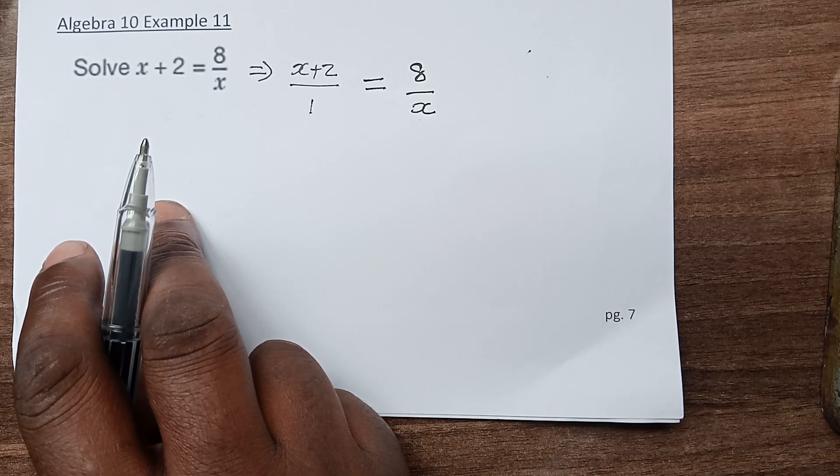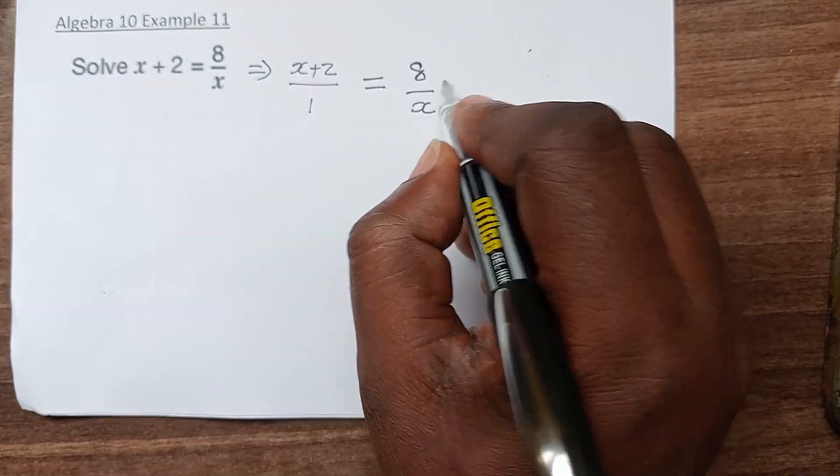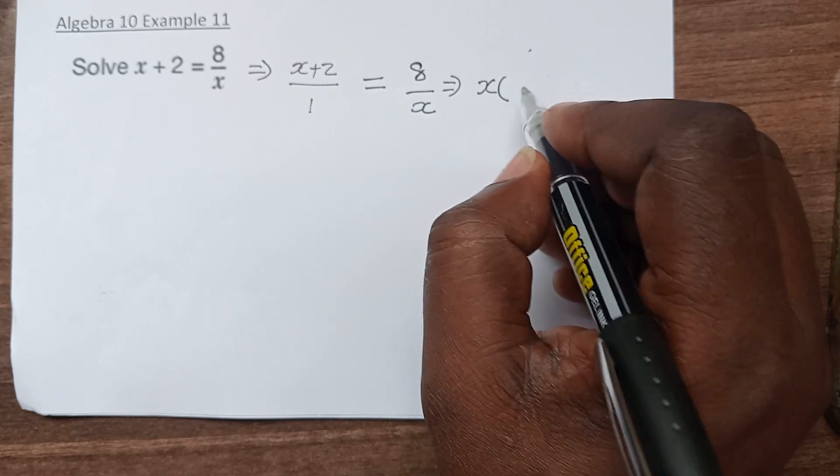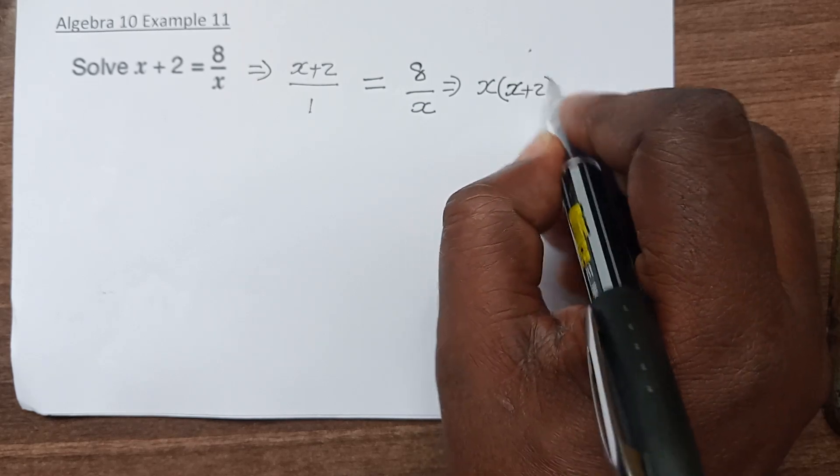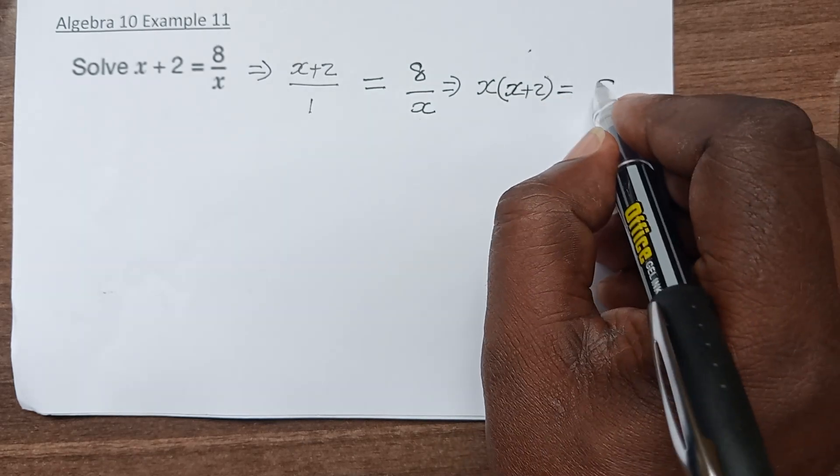When we have two equal fractions, we have permission to cross-multiply. After doing this, we get x multiplied by (x plus 2), which equals 8 times 1, which is 8.